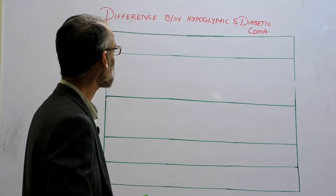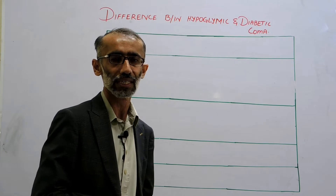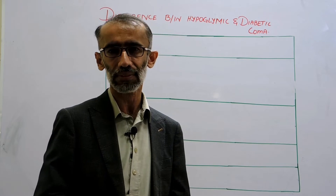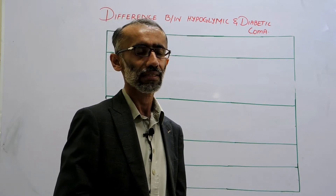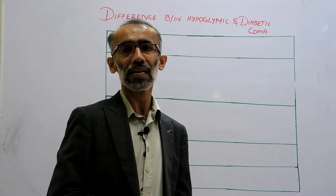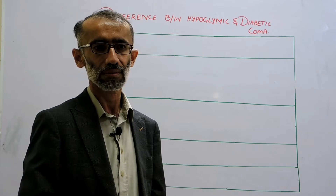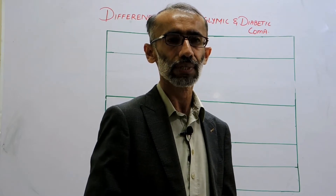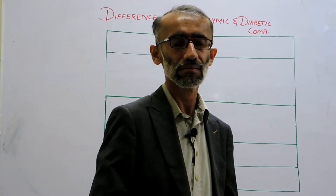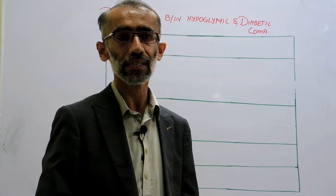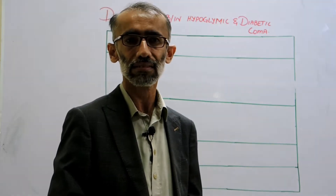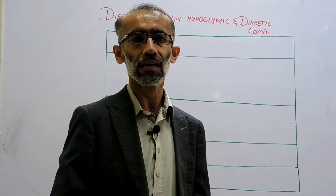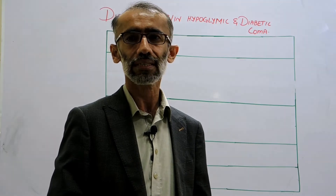Today we are going to discuss the differences between hypoglycemic and diabetic coma. Diabetes mellitus, commonly known as diabetes, is a metabolic disorder characterized by high blood glucose. It is presented with excessive thirst, frequent urination, extreme fatigue, and unexplained weight loss. Sometimes a patient with diabetes mellitus may present with coma.